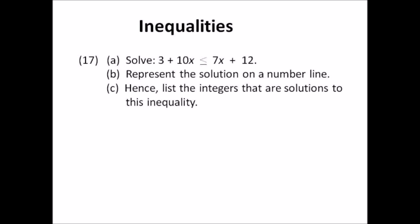Number seventeen: inequality. Solve 3 plus 10x is less than or equal to 7x plus 12. Then b) represent the solution on a number line. And c) list the integers that are solutions to this inequality from the number line. Remember to use three dots to indicate that the numbers continue on, since you can't write all possible solutions.